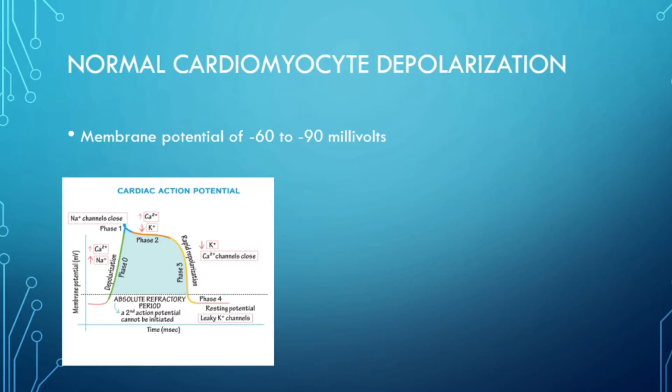Depolarization is depicted by the QRS on the 12-lead. The next phase involves potassium and calcium. Remember, potassium is still inside the cell with all the sodium ions at this point. Potassium then rushes out of the myocytes and calcium starts to enter. Since both are positively charged, there's very little change in the action potential, which you can see in the plateau of phase 2.